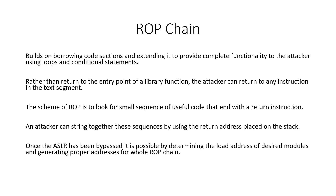A ROP chain builds on borrowing code segments and executes them to provide complete functionality to the attacker using loops and conditional statements. Rather than returning to the entry point of a library function, an attacker can return to any instruction in a text segment. The scheme of ROP is to look for small sequences of useful code that end with a return instruction.